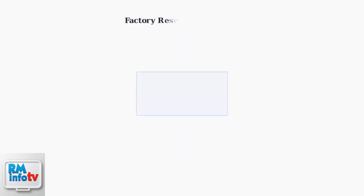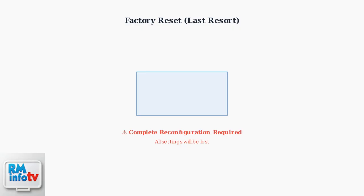As a final resort, perform a factory reset of your UDR7. This will restore all settings to default and require complete reconfiguration, but often resolves persistent connectivity issues.